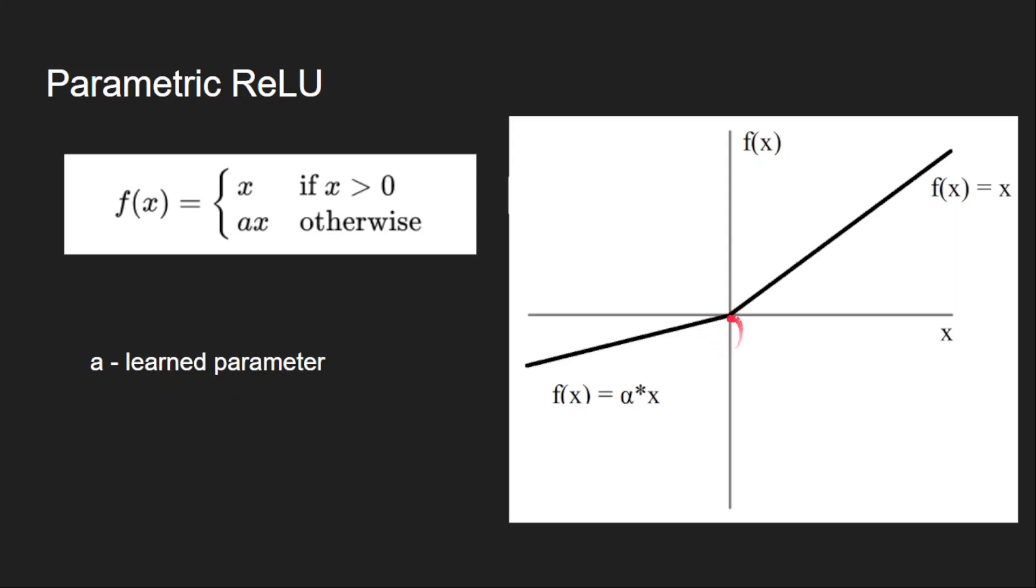Now all the variants we have seen so far are similar to ReLU and there is a discontinuity at x equal to 0. So all these variations we have seen are not differentiable at x equal to 0 because there is a discontinuity in the function. Although it is not a problem in practice, it is better to have a function that is continuous so that it is differentiable at all points. Now I need a function which looks similar to these but it should be continuous in nature.